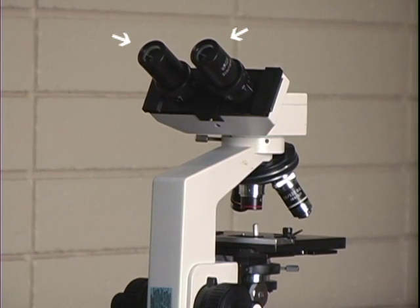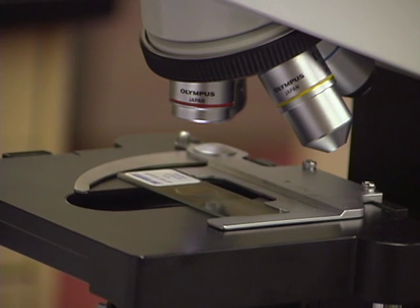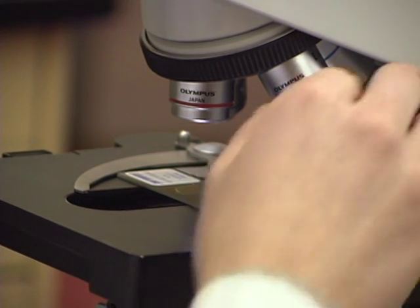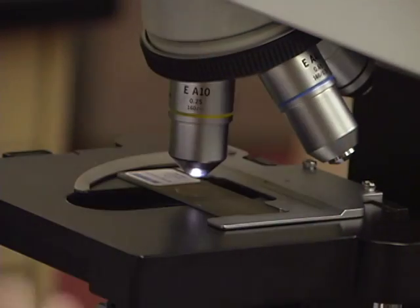Binocular microscopes have two ocular lenses. However, binocular compound microscopes have only one objective lens that can be used at one time, and so the image is only two-dimensional.